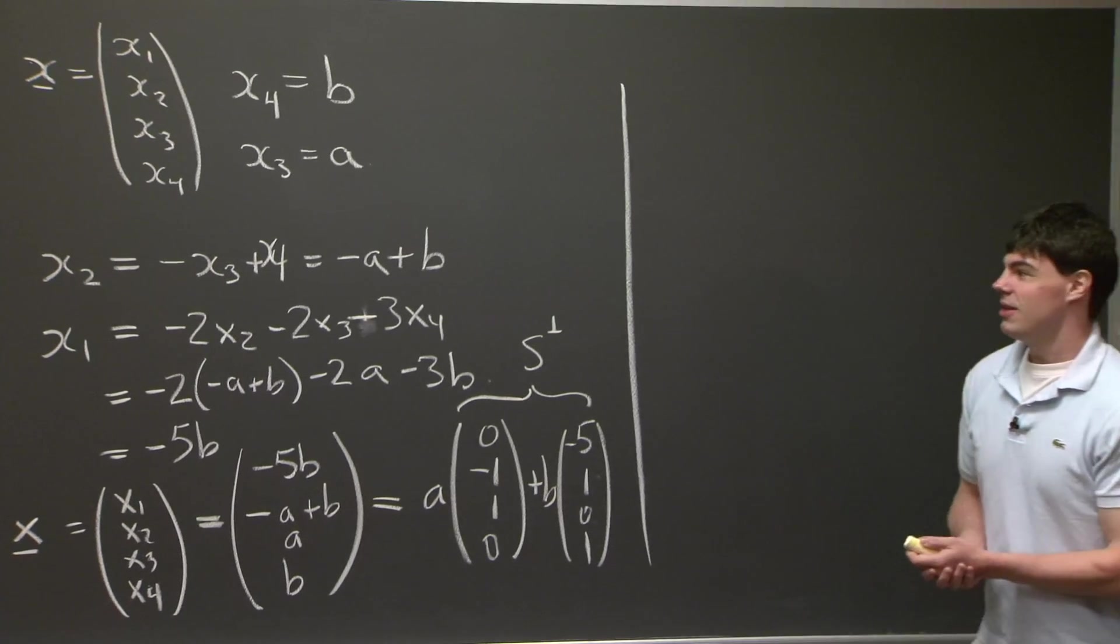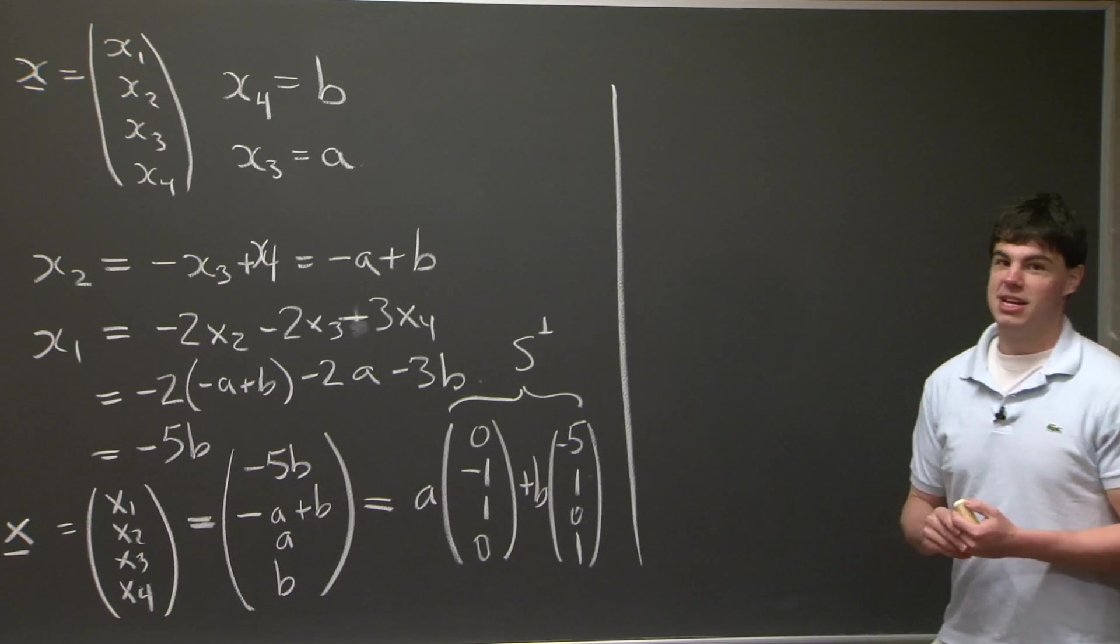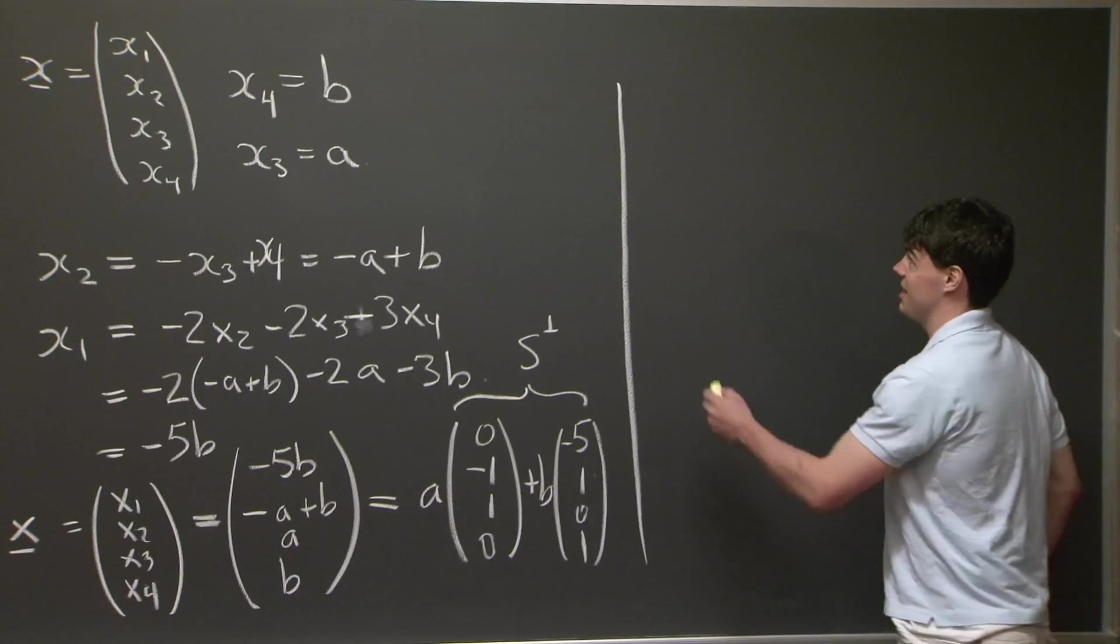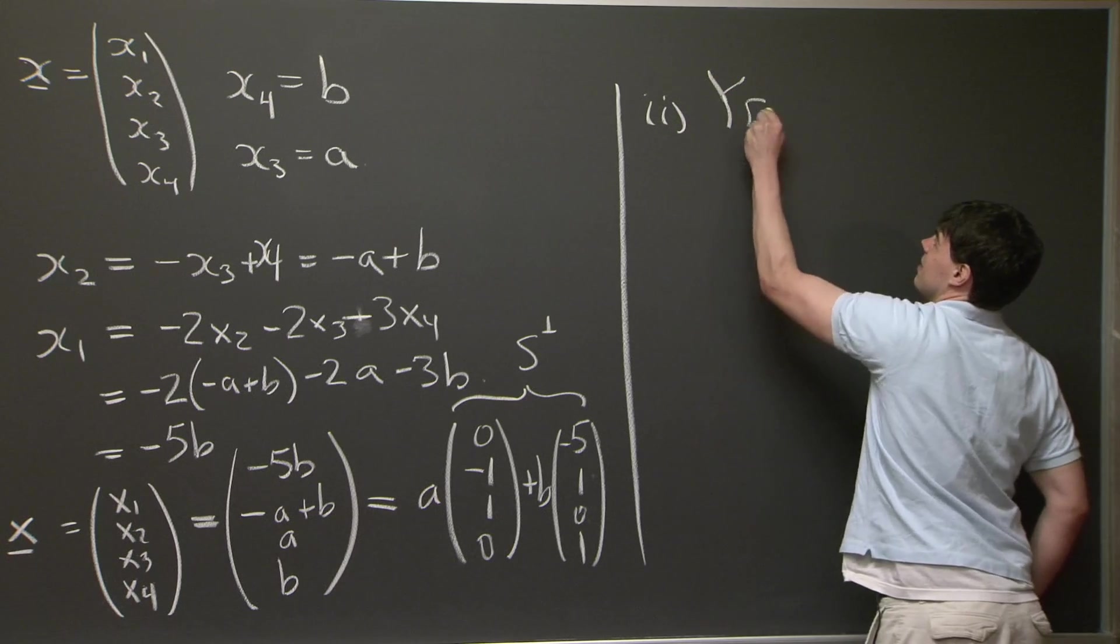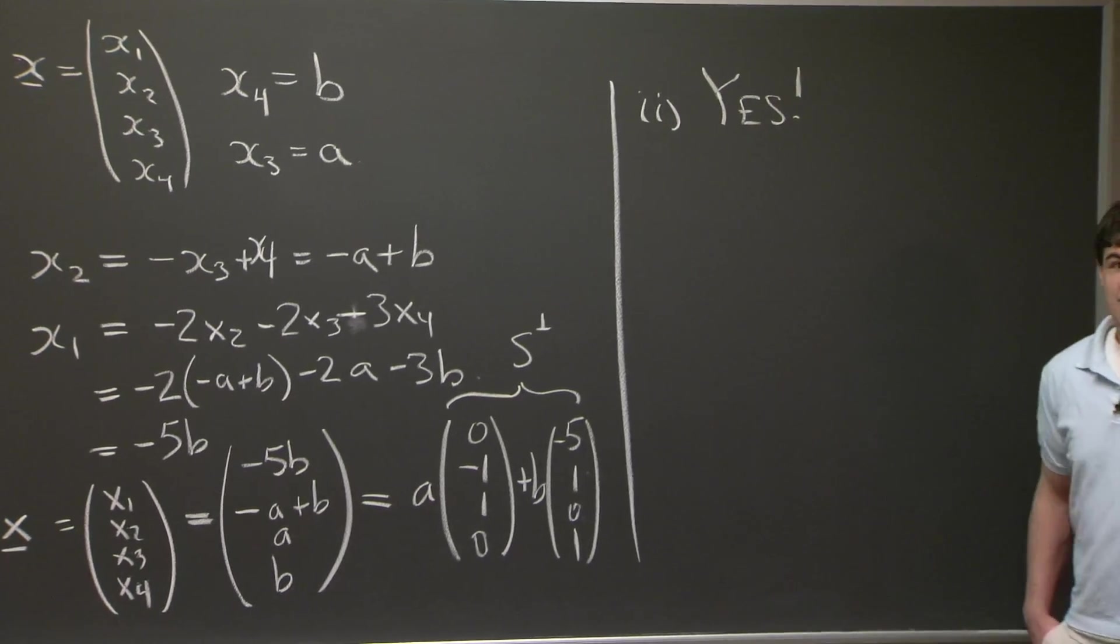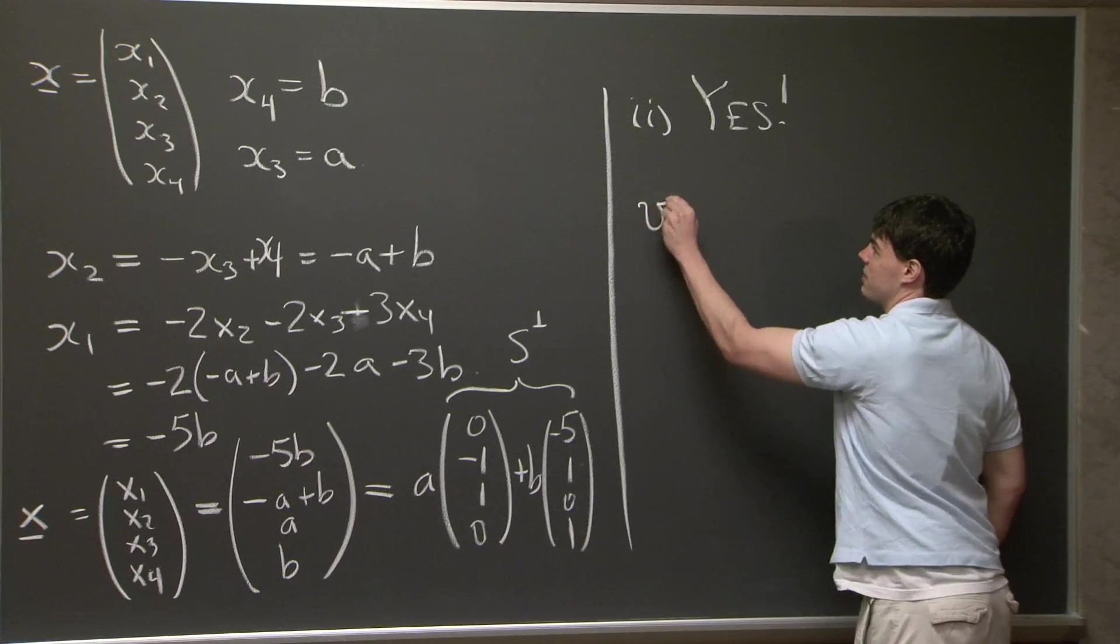Now for part 2, can every vector v in R4 be written uniquely in terms of S and S perp? The answer is yes. So how do we see this?